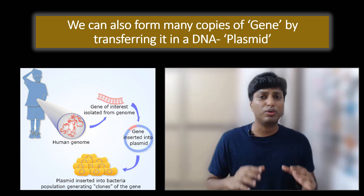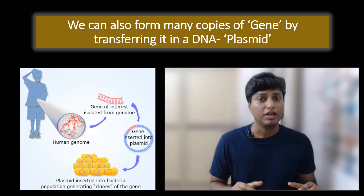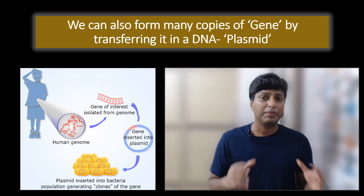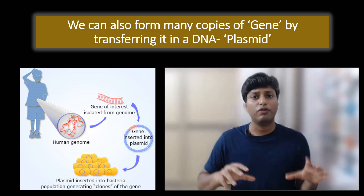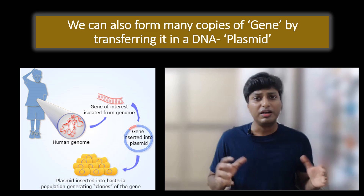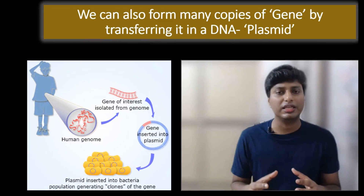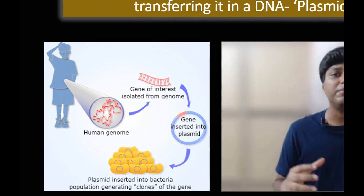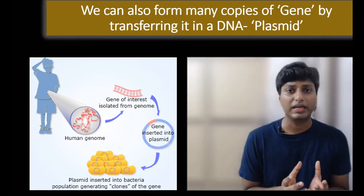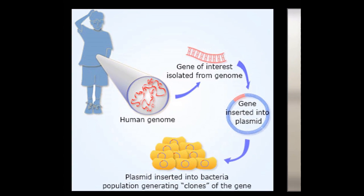As we said, today it is possible to form many many copies of genes. Genes are nothing but fragments of DNA. But the question is — how can we form many many copies of such genes? For that we require a different form of DNA in which we can integrate the gene and finally form many many copies of that particular gene. That different form of DNA which is used to form many copies of genes is known as a plasmid.